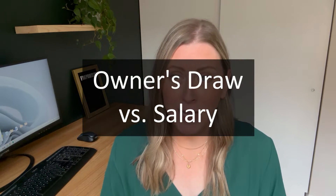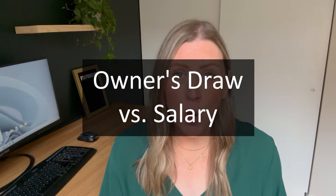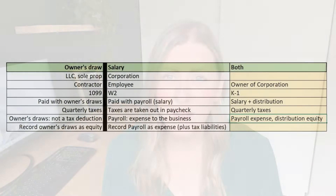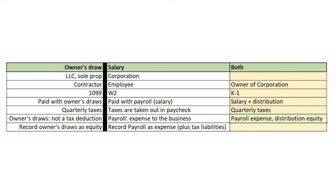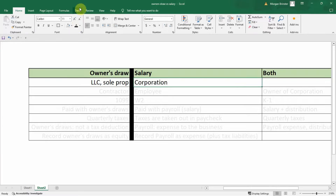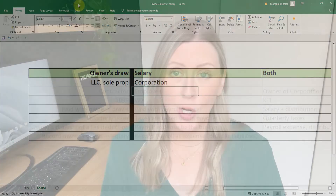Today we're going to talk about the difference between different types of salaries. We have a regular salary, an owner's draw if you are the owner, and then a distribution. As a bookkeeper, you should have a general familiarity with these different types of businesses and different ways of people getting paid, because you are likely going to have to interact with payroll or something similar at some point.